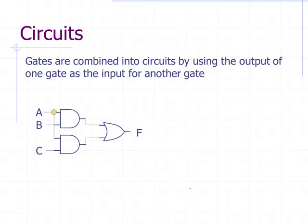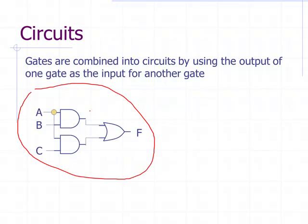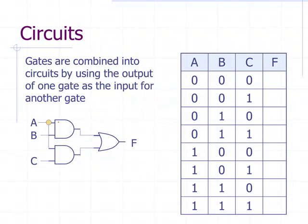Now, once we put these gates together in combination, what we have is a circuit. This example has AND gates and an OR gate. A bubble on a wire connection means it's a connector, so electricity flowing on one wire also flows through the connected wire. If there's no connector, electricity is not shared — it's like wires passing on top of each other without connecting.